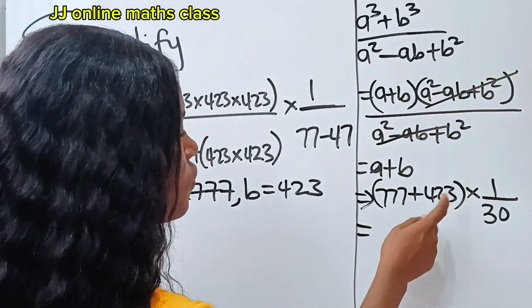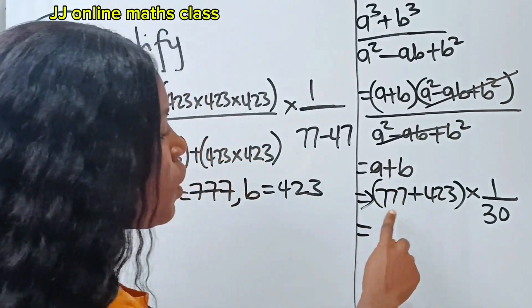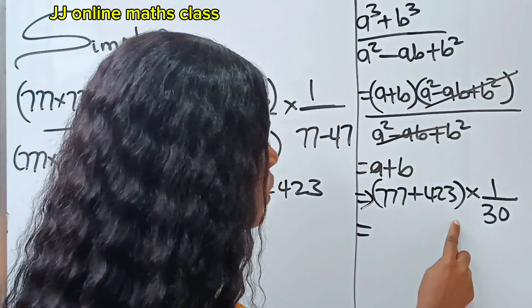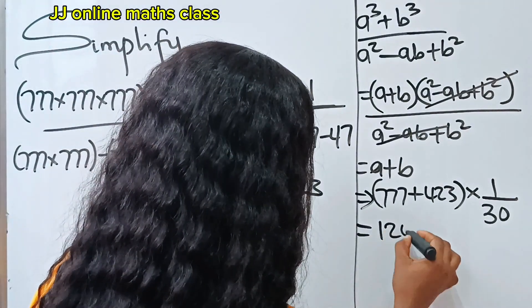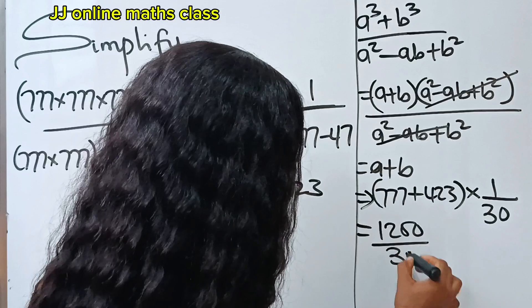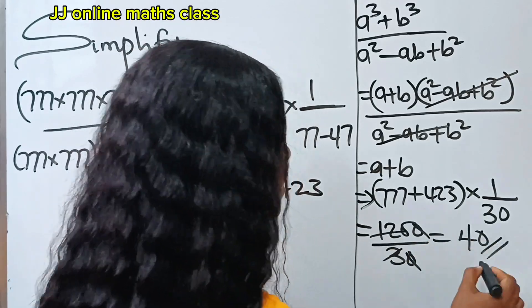Now 777 plus 423, the same thing as 700 plus 500, right? So that is 1200. So we have 1200 divided by 30. Now when you divide this, what will you have? 40.